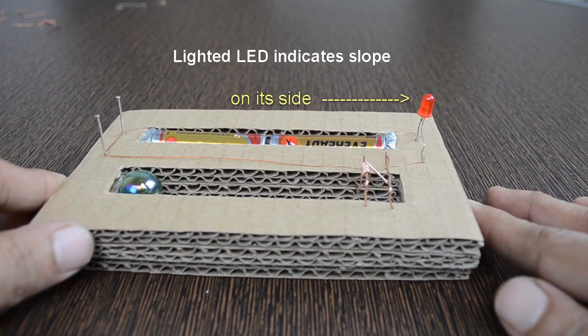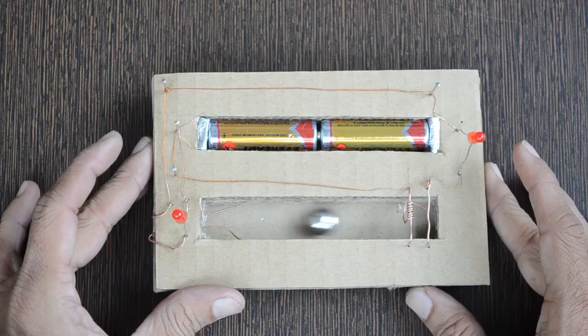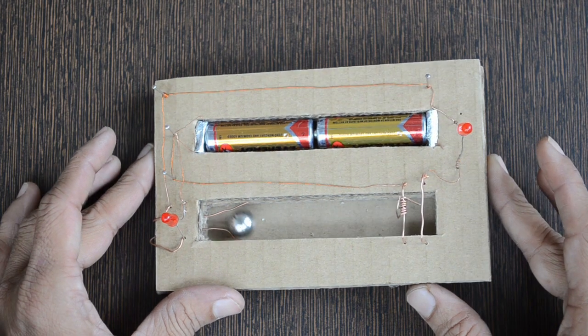This arrangement can be used to find the slope of a plane. A steel ball also can be used to achieve the same result.